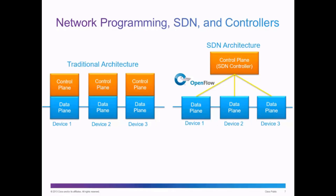In an SDN, or Software Defined Networking Architecture, notice how the control plane has been separated from the data plane, and now the three devices — let's say they're three switches — could be controlled from a single control plane, or from a single controller, using the OpenFlow protocol. This way, the three switches can be programmed from a single point, or a single software program.